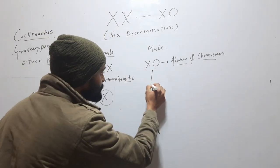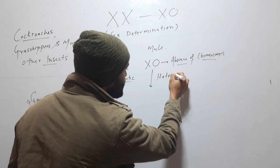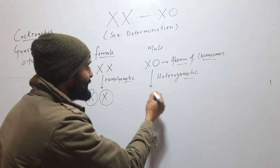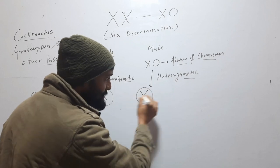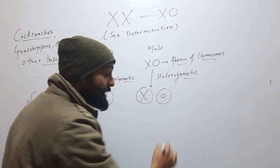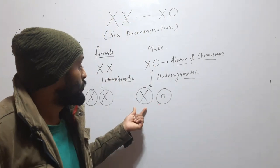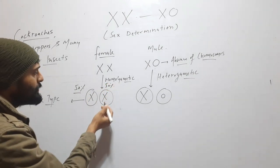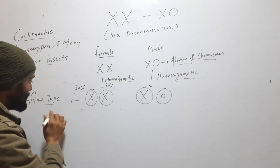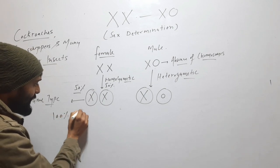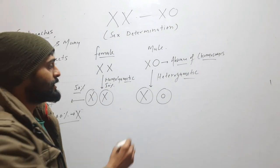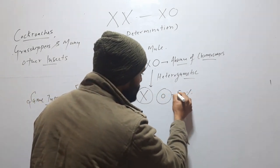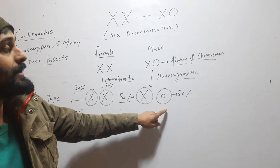In case of male, it will be heterogametic because it produces 2 types of gametes: one will be X, and another will be O — meaning absence of any chromosome. So 50% of gametes will have X and 50% will have no chromosome. That is why it is called heterogametic.